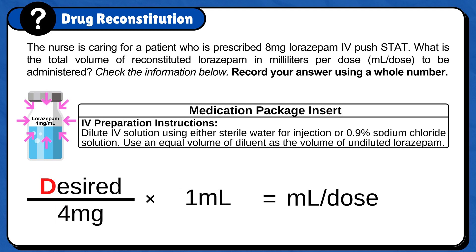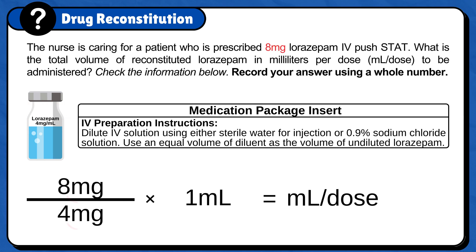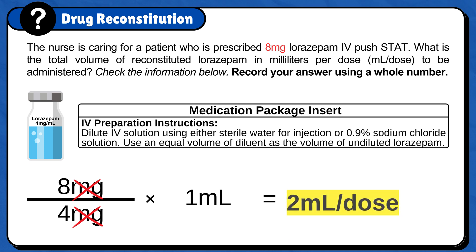For desired, you will plug in the doctor's order: 8mg. Since both units on top and bottom are the same — milligrams — we can calculate it: 8mg divided by 4mg times 1mL. Milligrams cancel out and the answer is 2mL per dose.